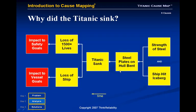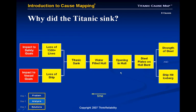The impact to the organization's overall goals is determined in the problem definition, and it provides the starting point for the analysis step. The impact to the safety goal and the impact to the vessel are both shown as starting points in the analysis. The why questions begin from there. As people add more information about the problem, it can all be added in a very organized way to the cause map.